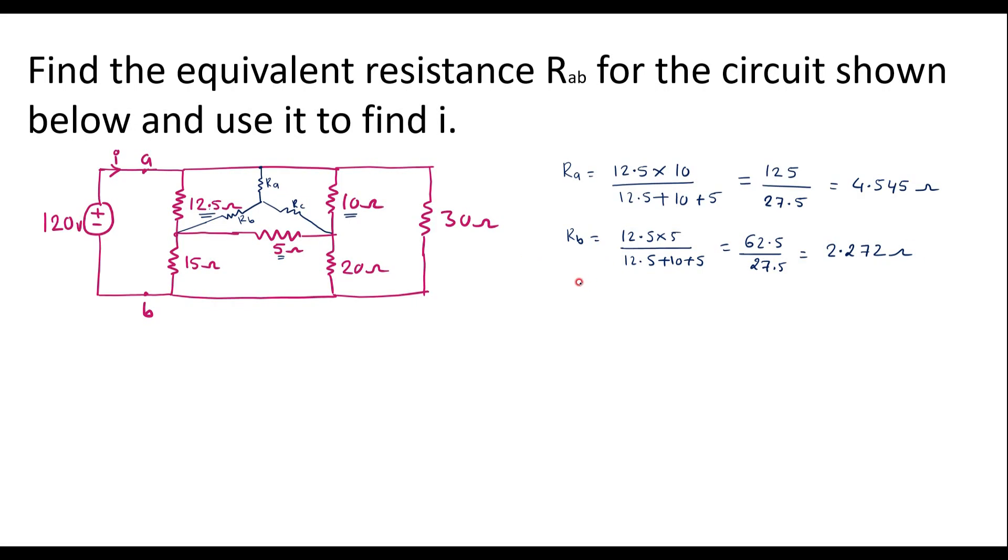RC is equal to 10 into 5 divided by 27.5, which equals 1.818 ohm.